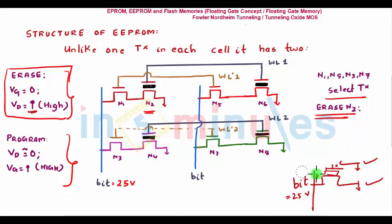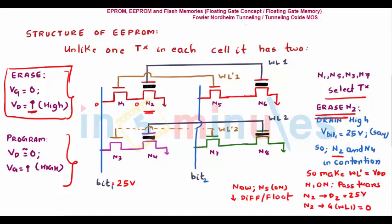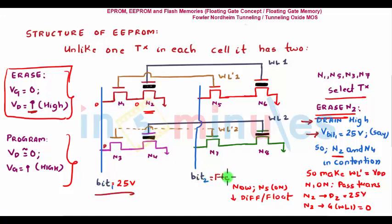So how does the select transistor avoid this global erase? We want to erase N2. First, we make drain high — Vbit1 = 25 volts. Vbit2 at that point is kept floating. So N2 and N4 are in contention on the first column. This column with Vbit2 floating means no change on drain voltage — it's neither 0 nor 25 volts, so that column is out of the picture. Only the first column remains in contention, specifically N2 and N4.